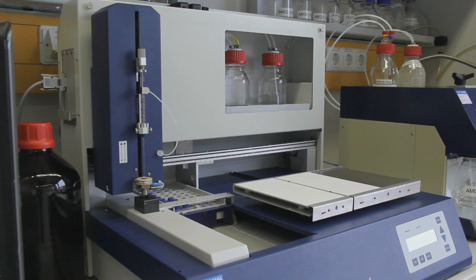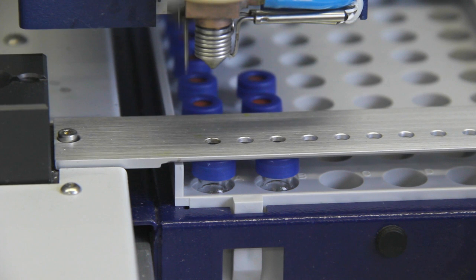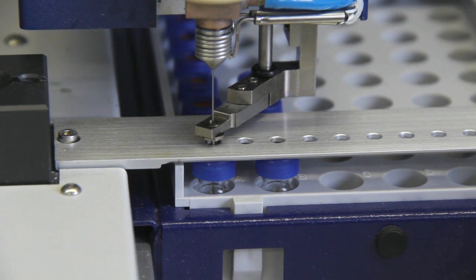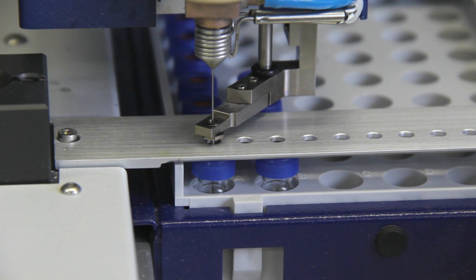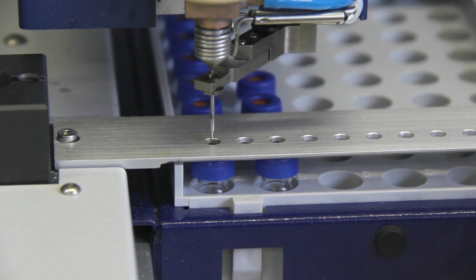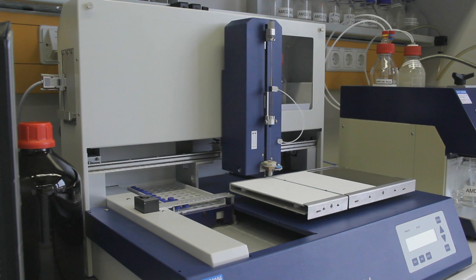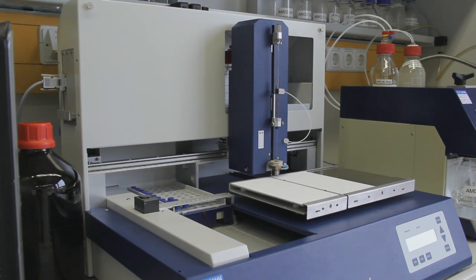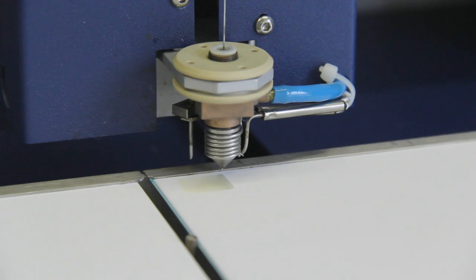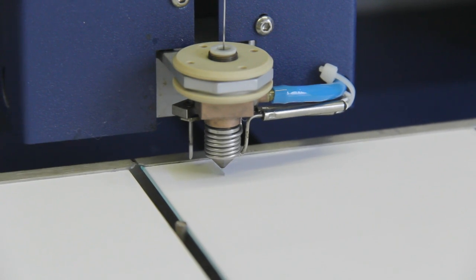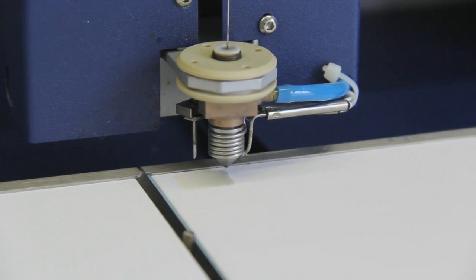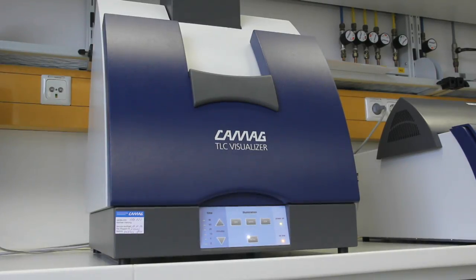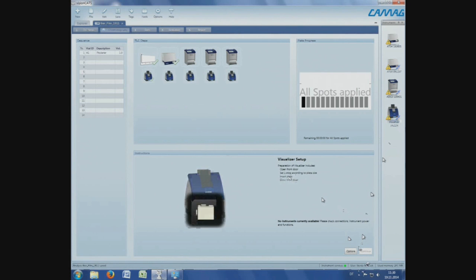After rinsing the ATS-4 syringe, 300 µL of each beer solution were withdrawn and sprayed on the plate as aerosol by nebulizing with nitrogen gas. Each sample solution was applied in the form of a rectangle of 10 x 30 mm to spread the huge beer matrix over a large adsorbent area. The dosage speed was 800 nL per second. Now the samples were applied.